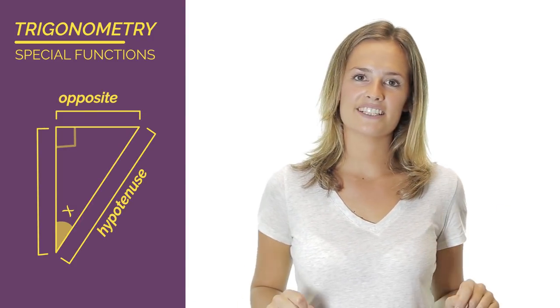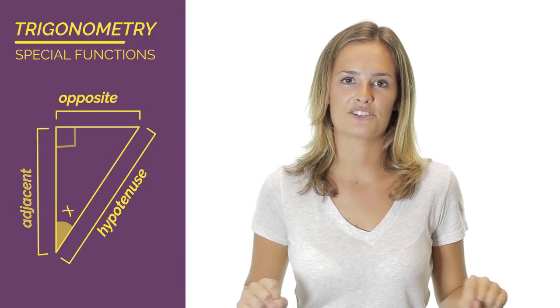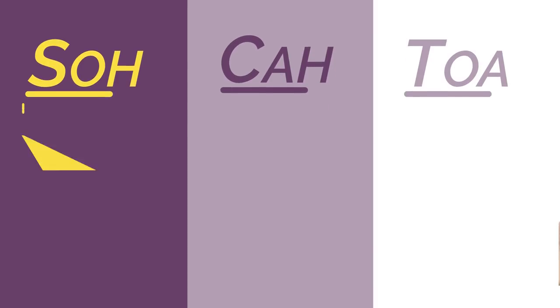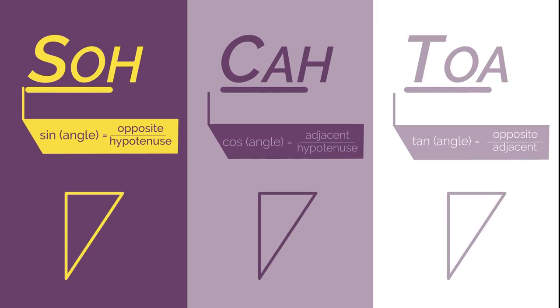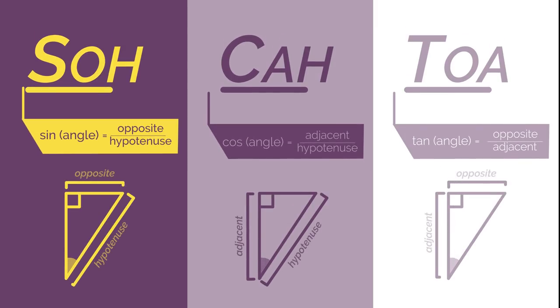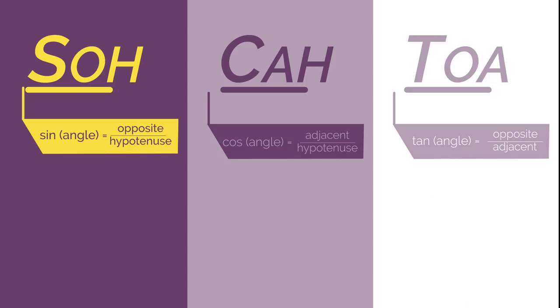Now that we know about the adjacent, opposite, and hypotenuse, we're ready to learn about the special mnemonic called SOHCAHTOA. Sine, cos, and tan are just ratios between sides and angles on right angle triangles. SOHCAHTOA helps us remember which function to use to find which sides.